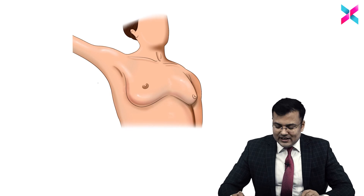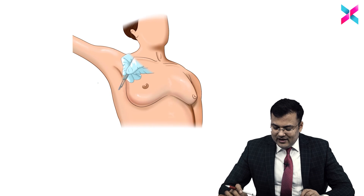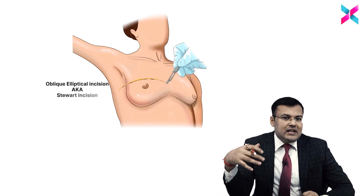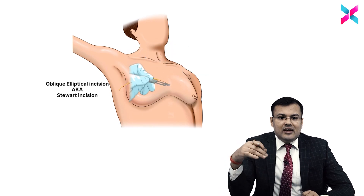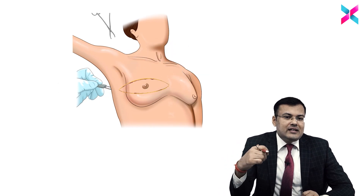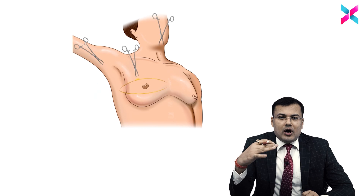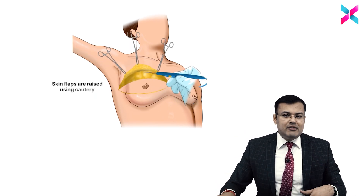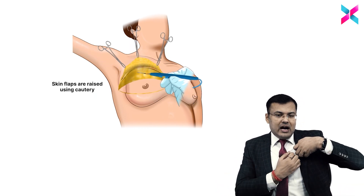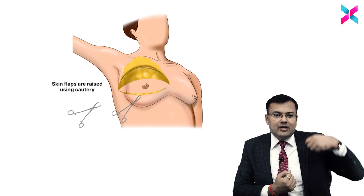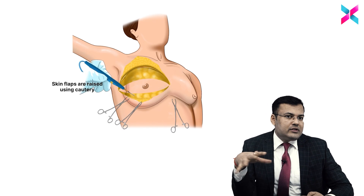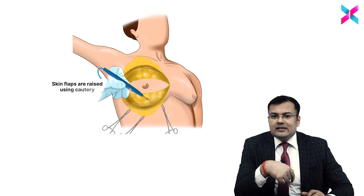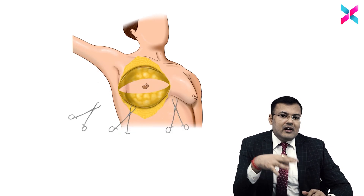Now, see how we perform mastectomy. First, we are giving this kind of elliptical incision, also known as the Stewart incision — an oblique elliptical incision. After that, we are going to raise the skin flaps. You can see we are using Ellis tissue forceps, raising the skin flaps with the help of cautery.